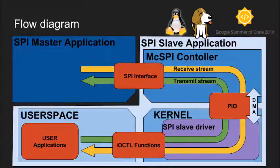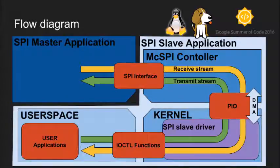This diagram presents the data flow in the various parts of the system. The user on the SPI slave side installs DTS. At this moment, the SPI slave driver is enabled. Next, the user application sets the driver to the state of waiting for data. The SPI master application sends the data, which is later received by the MCSPI controller. The slave driver accepts the interrupt. After that, the data buffer is forwarded to user space. The user application should send data back to the driver as soon as possible, and then forward it to the controller.